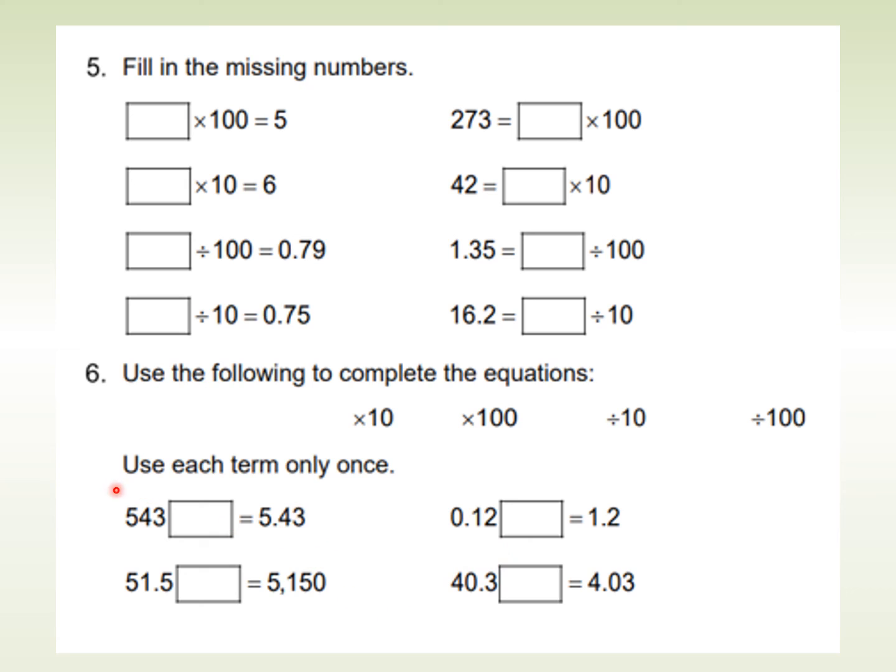And the last four, you've got these four calculations. You've got to use each one once in these four boxes. So 543, either multiply or divide by 10 or 100, equals 5.43. Well, immediately I can see it's getting smaller. So it's going to be divide. But which divide? Divide by 10, divide by 100? You can only use each one once. Okay, pause and have a quick go at these. And the answers will be on the next page.